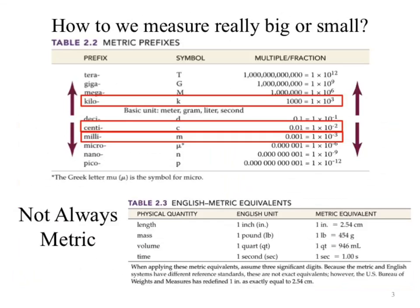If we move to the English system, you'll notice the formatting is a little bit clearer in their table because they provide you the equation at the end. That's ultimately because we can't do just the prefix rule there. So we're looking at inches converting over to centimeters — we don't have as easily formatted a table for that.